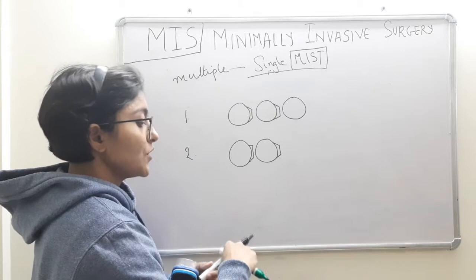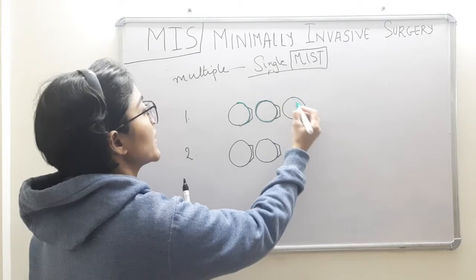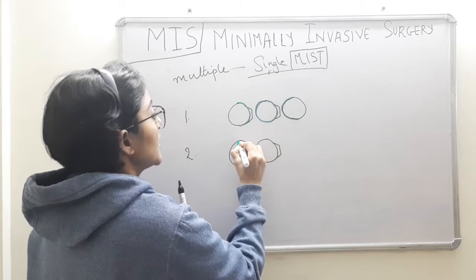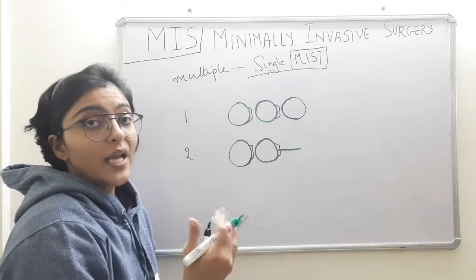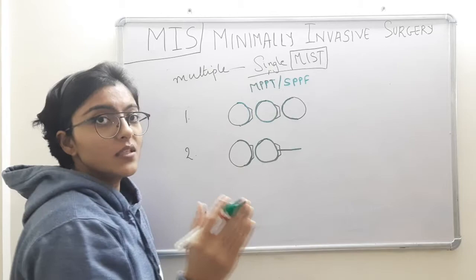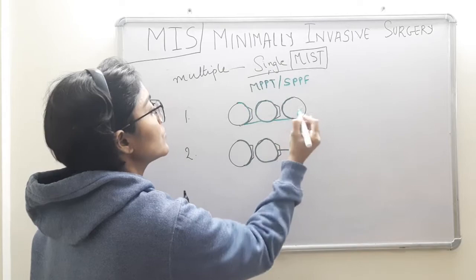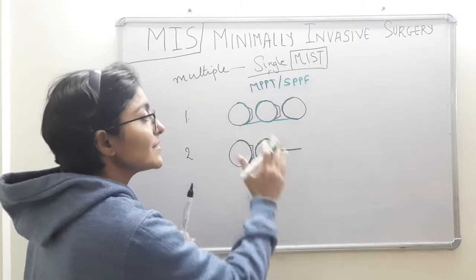The incisions consist of intrasulcular incisions followed by horizontal incisions. The intrasulcular incision in this case — because it is MIST — will involve both aspects. And here, because it is a distal tooth, we will consider giving a crestal incision for access and visibility. The horizontal incisions will be either MPPT or SPPF based on the interdental width dimensions: narrow dimensions use SPPF and wider dimensions use MPPT.